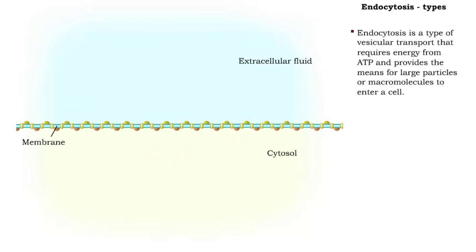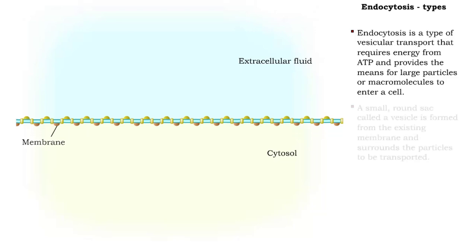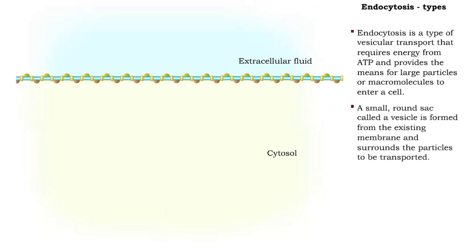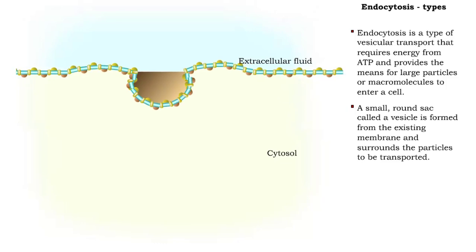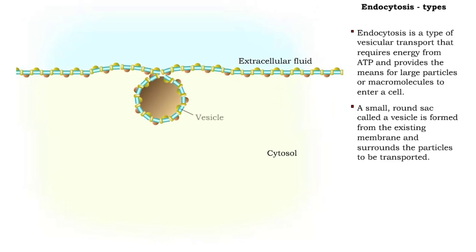Endocytosis is the movement of large particles or macromolecules into the cell. During endocytosis, a small round sac, called a vesicle, is formed from an existing membrane and used for transport.